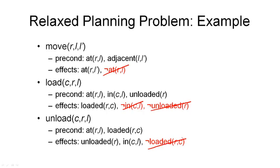What this gives us is a planning problem that contains some magical objects. For example, looking at the first operator where we move the robot R from location L to L prime: the precondition is that the robot is at location L, and as a result the robot will be at location L prime. But because we've removed the negative effect, the robot would still be at location L — so it's now in both places. The same goes for containers in the other actions: after a load or unload action, containers remain in the place where they used to be, but they're also in the new place. And that's the problem we need to solve to compute the relaxed problem heuristic.